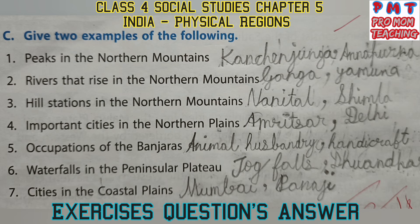Give two examples of the following. First, peaks in the northern mountains: Kanchenjunga and Annapurna. Second, rivers that rise in the northern mountains: Ganga and Yamuna. Third, hill stations in the northern mountains: Nainital and Shimla. Fourth, important cities in the northern plains: Amritsar and Delhi.